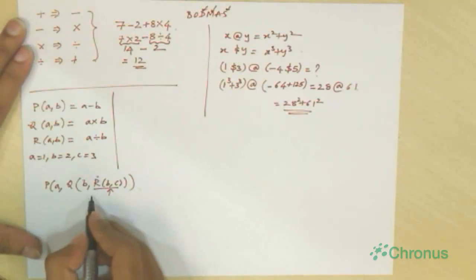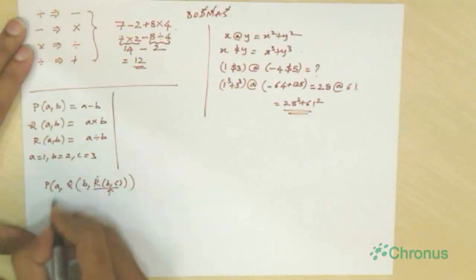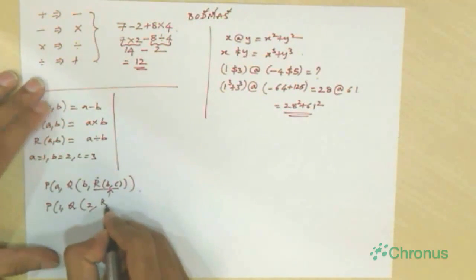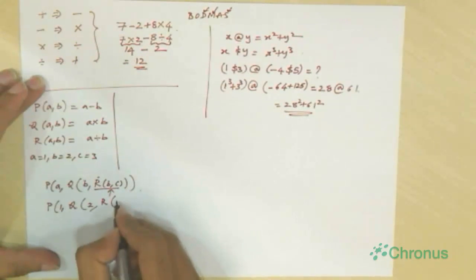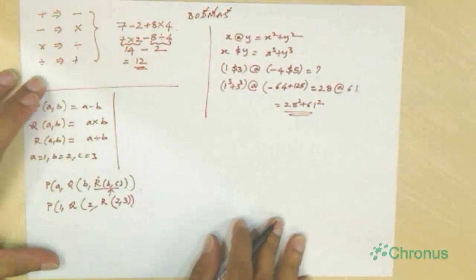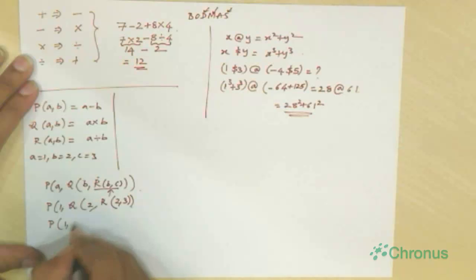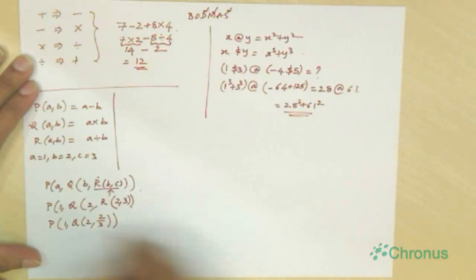So we know that a equal to 1, b equal to 2, c equal to 3. So let us substitute p of 1 comma q of 2 comma r of 2 comma 3. r of a comma b is a divided by b. So we have p of 1 comma q of 2 comma 2 by 3. And q of a comma b is a into b. So p of 1 comma 4 by 3. And p of a comma b is a minus b. So it is 1 minus 4 by 3.